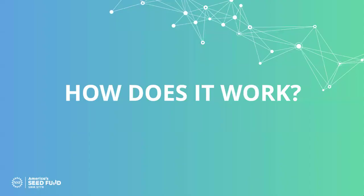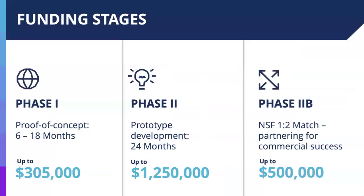Now that I've shared a little bit of background, I want to talk about how the program works and how companies can apply. We have two phases of funding. Phase one is for proof of concept, where you and your team are working to de-risk a highly technical, innovative concept over six to 18 months. This funding is $305,000, and what you're looking to do is to de-risk this highly technical innovation. If you are successful in de-risking the innovation and you meet your success metrics, then you are eligible to apply for a phase two.